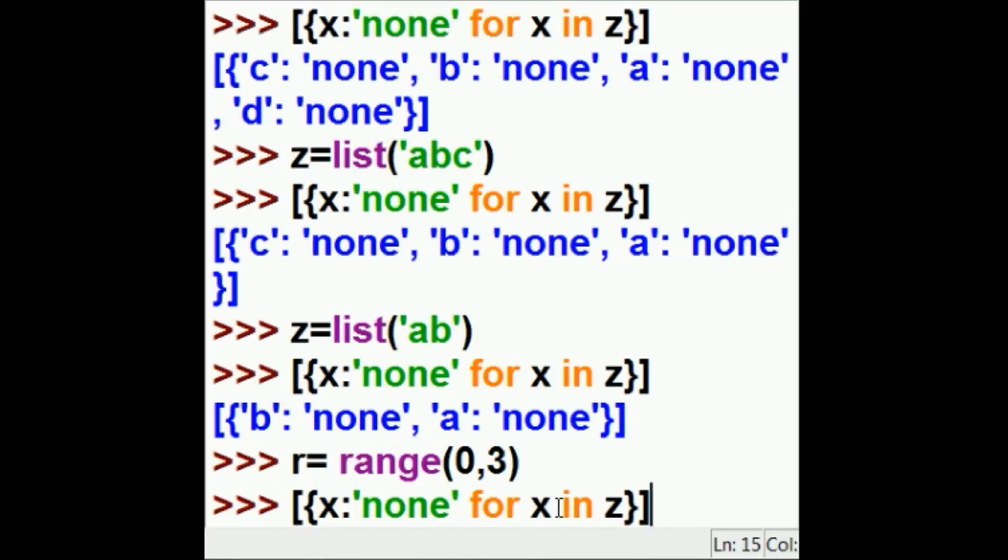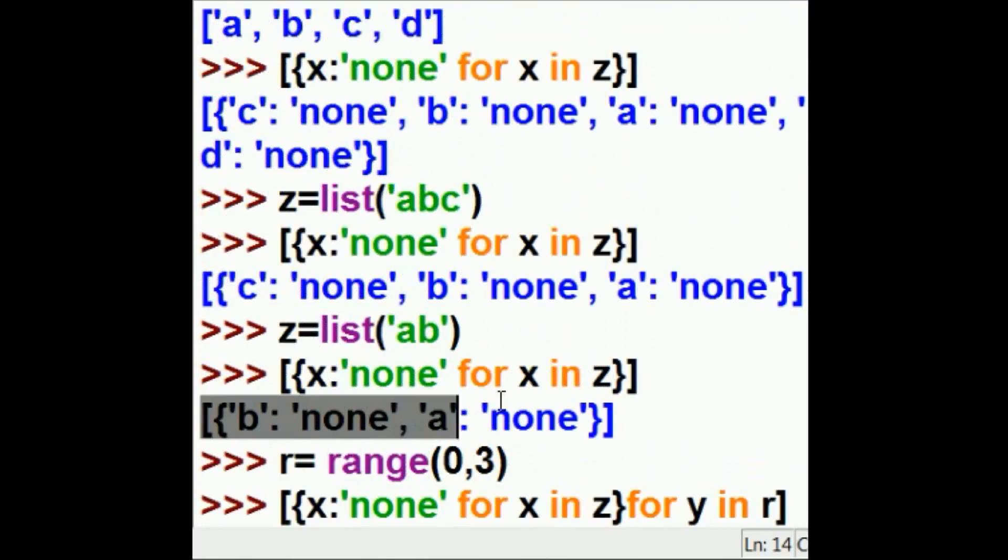Well, I take this dictionary comprehension, click inside, right in between the curlies and the square brackets, because I want to put another loop right here. I'm going to say for every Y in R. So I want to see this output 0, 1, 2 times. That's three times. How did I do that?